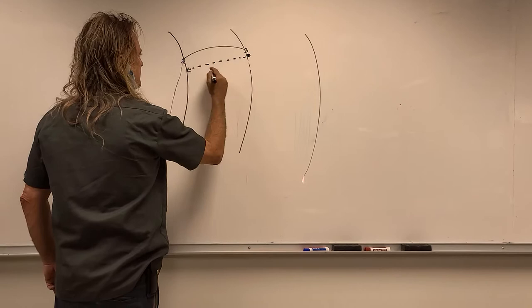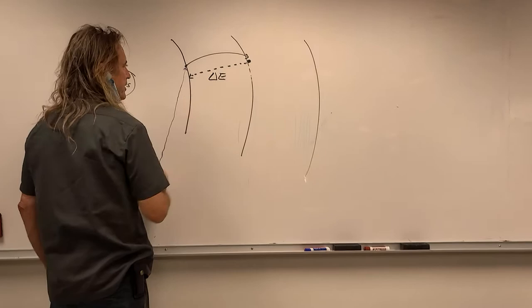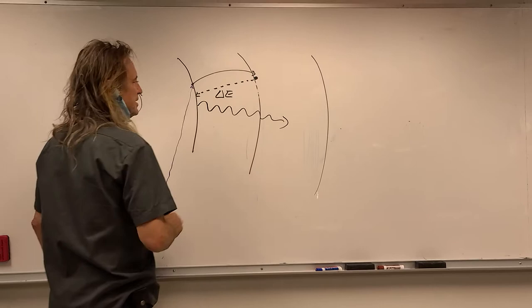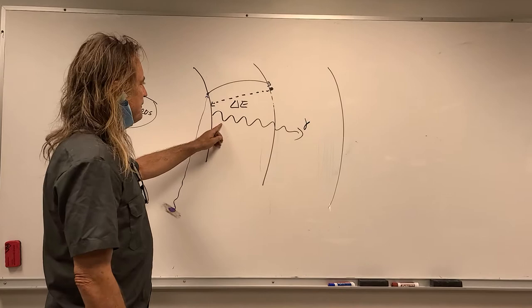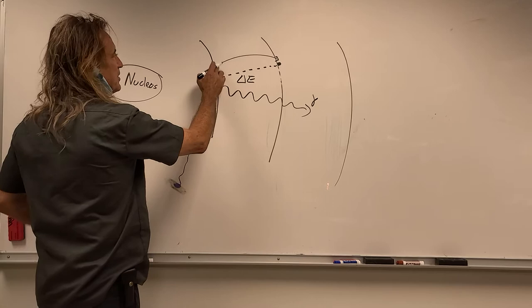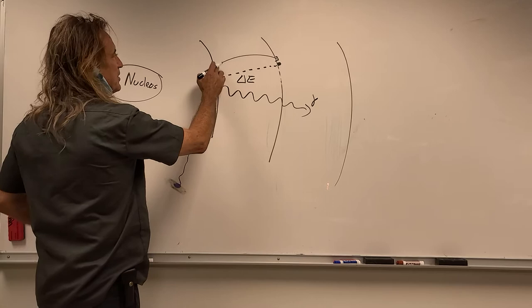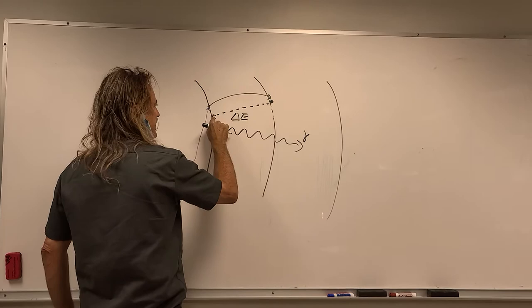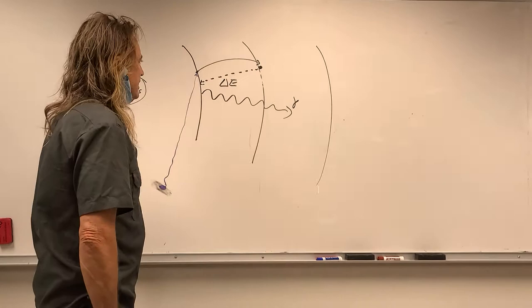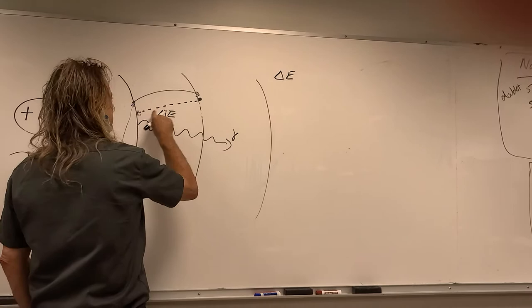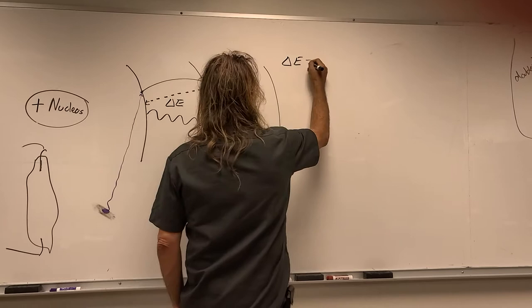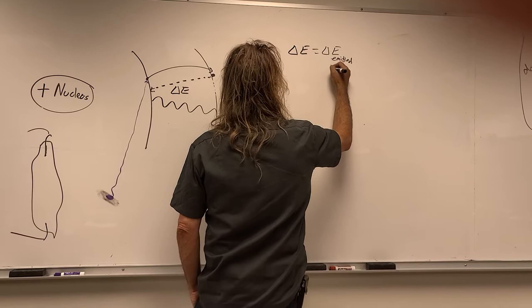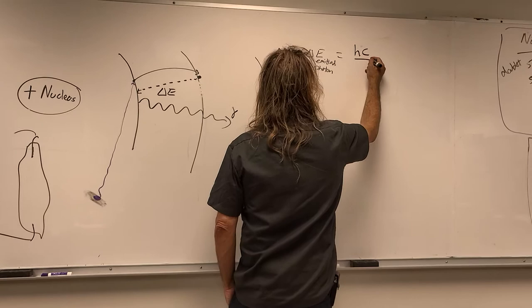That electron can then fall back to its original orbital, undergoing a change in energy delta E, which is the difference in potential energy between the two orbitals. Once that happens, a photon is emitted. The discharge electrons zoom through the gas, collide with electrons, knock them to higher energy orbitals, and as they fall back in, they emit a photon. The energy of the photon equals the energy difference between the two states, which equals Planck's constant times the speed of light over the wavelength of the emitted photon.